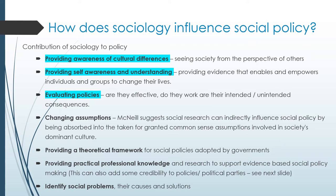So how does sociology influence social policy? The three key points Giddens highlighted are cultural awareness, self-awareness, and evaluating the effectiveness of policy. Additionally, McNeill says that sociological research can change taken-for-granted negative stereotypes and labelled assumptions about a culture, group, or individual. Sociology can also provide a theoretical basis for policies adopted by governments, and provide the practical and professional knowledge to support social policy — for example, experts doing research to find the impacts of a government policy before it is implemented.